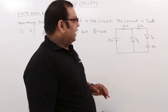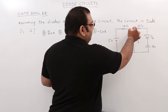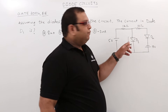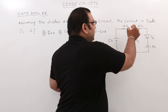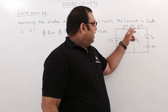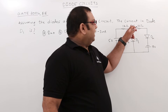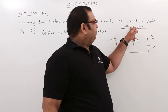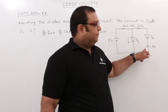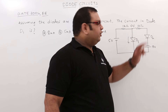When D1 is forward biased and the diodes are ideal, the voltage drop across D1 is 0. So the voltage at that node is 0 volts. Now, observing that this node is 0 volts and the 8V source has its negative terminal connected here, D2 is also forward biased.